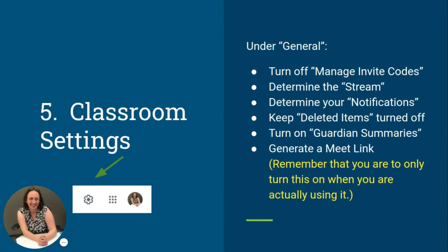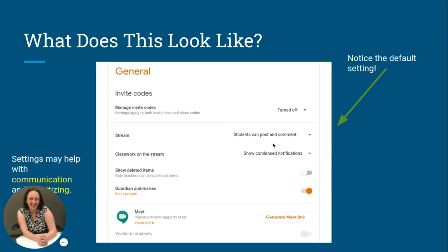Determine your notifications — how often do you want to be notified by email? Most likely keep deleted items turned off — showing deleted items is of no help to students. Turn on guardian summaries so parents can be invited as guardians. If we had to go back to Google Meets, make sure you have the ability to generate a Meet link for students. Only turn it on when you're actually using it — students like to click into it, and if nobody's waiting there, it causes confusion. Lock it out from them if it's not something they need.